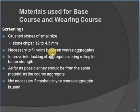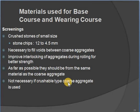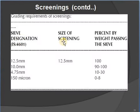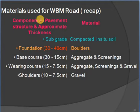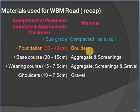Screenings are necessary to fill voids between coarse aggregates and improve interlocking when rolling is done for good strength. Materials should match the coarse aggregates as far as possible. Sieve designation for screenings: 12.5 mm — 100% passing; 10 mm — 100%; 4.75 mm — 0 to 8%; 1.18 mm — 10 to 30%; 0.075 mm — 9 to 10%. These are the grading requirements of screenings.